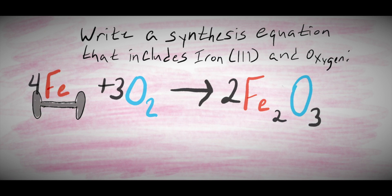Now, everything is balanced out. So, to write the chemical equation for this question, we would write out 4 iron atoms plus 3 oxygen atoms yields 2 iron oxide atoms. Or in other words, 4 Fe plus 3 O2 yields 2 Fe2O3.